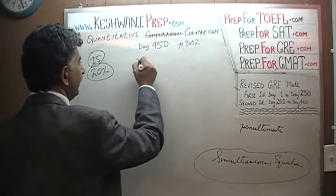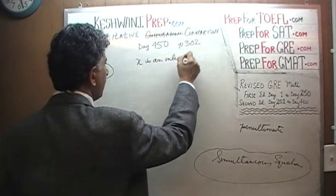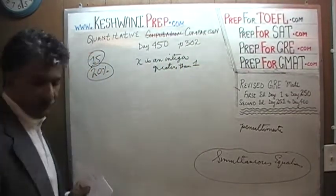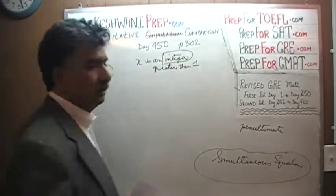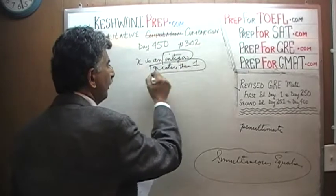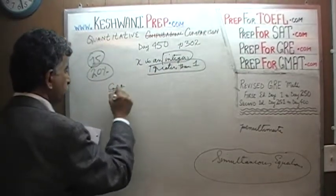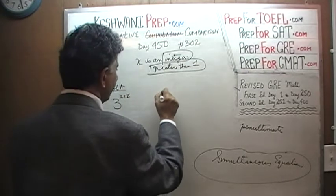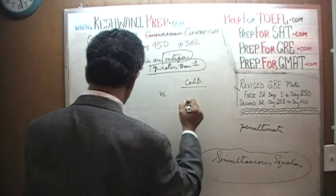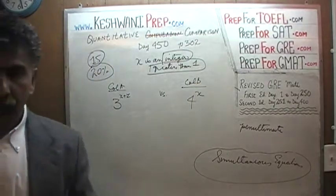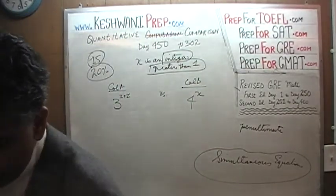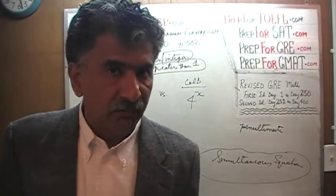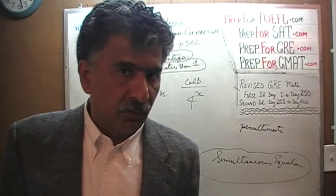Here is what we are told: x is an integer greater than 1 — so x has to be a whole number greater than 1. Column A is 3 raised to x plus 1, versus column B, which is 4 raised to x. I am going to give you an unobstructed view — pause the video, solve the problem yourself, then resume and compare your work against what we are about to do together. You must always do that with every single problem.